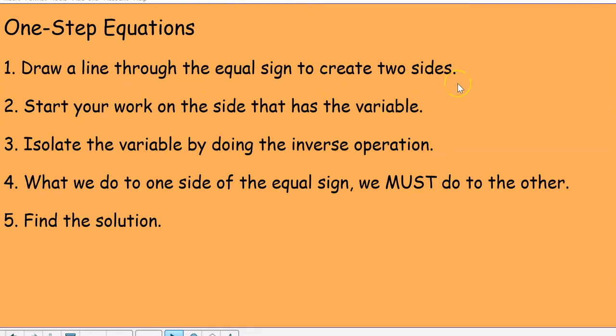Draw a line through the equal sign to create two sides. Always start your work on the side that has the variable. Isolate the variable or get it by itself by doing the inverse operation. Inverse means opposite.